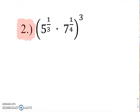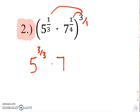So for number 2, we've got a power on the outside. So just like what we've done in the past, we're going to distribute that 3 in there. And remember, if we're working with fractions, it's just better if everything is a fraction. So I'm actually going to make this 3 over 1. When you multiply fractions, tops with tops, bottoms with bottoms. So we're going to end up getting 5 to the 3 thirds times 7 to the 3 fourths.